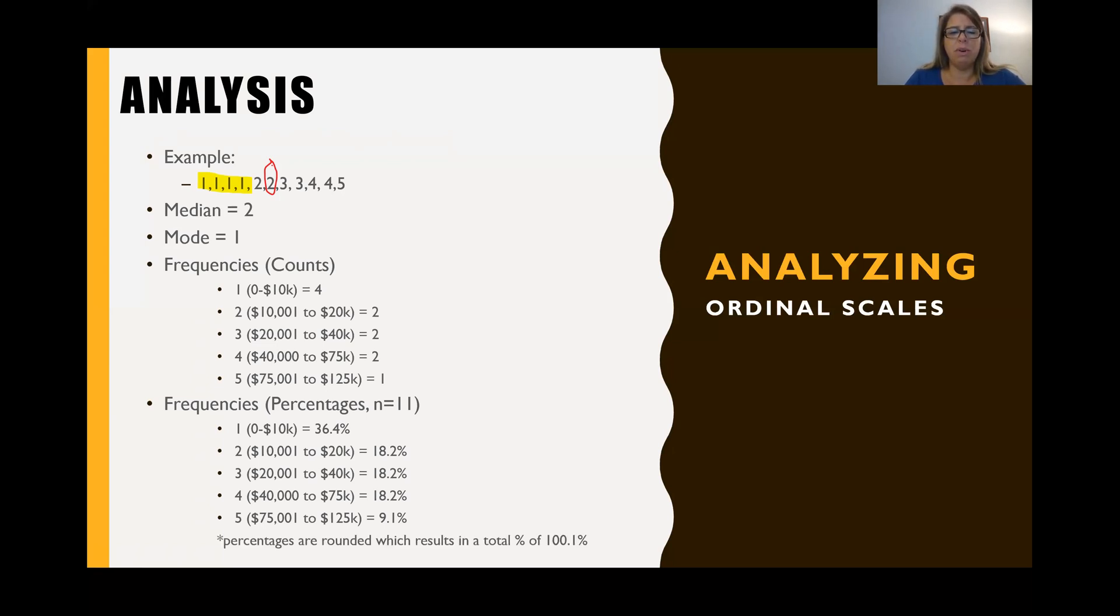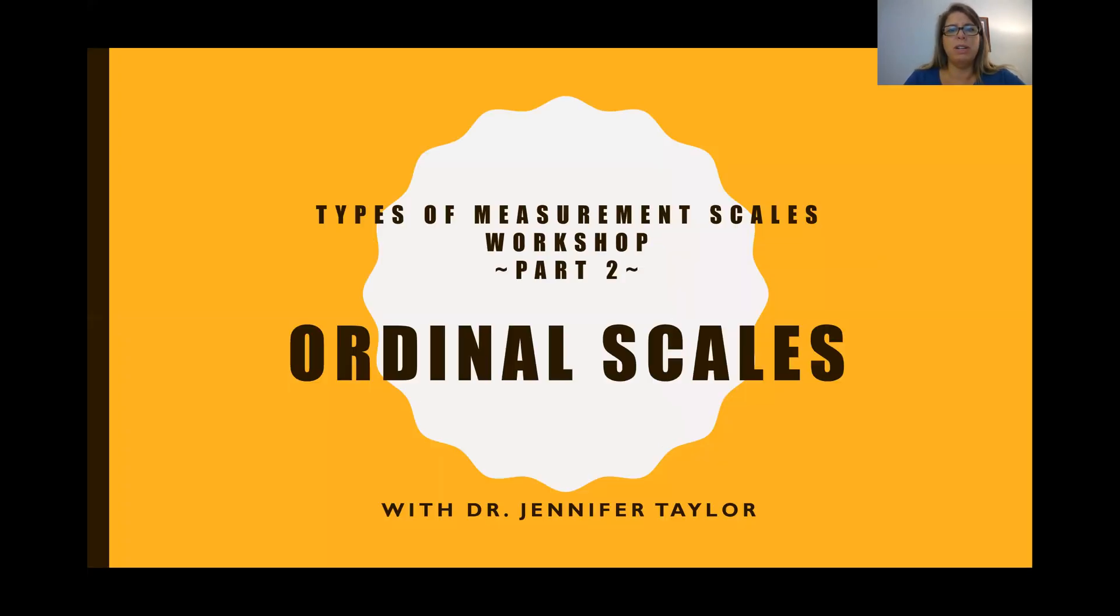One last thing just to remember is that when you do percentages, and they're rounded, you could have, and in this case, we have a total that's 100.1%. And that's a rounding issue. So always make sure you're aware of any rounding issues that you have. So you can explain it to your client or professor when you're reporting on your analysis. But that's it for the types of measurement scales workshop talking about ordinal scales. If you have any questions, please let me know. I'll talk to you later. Bye.